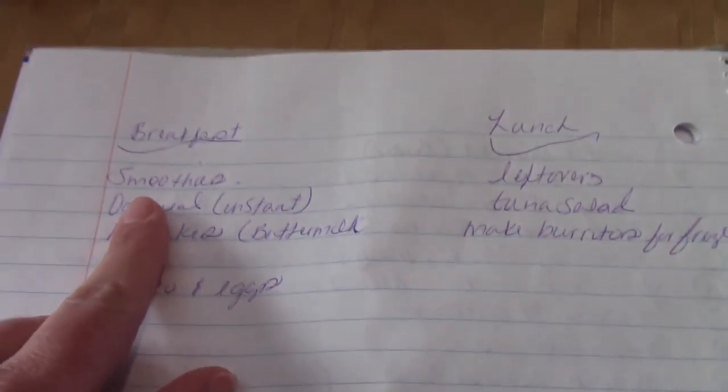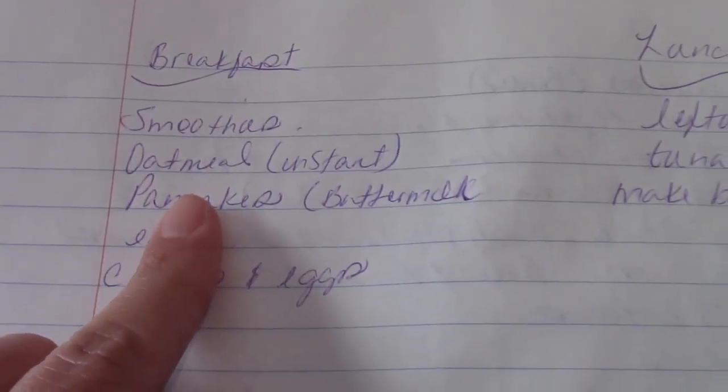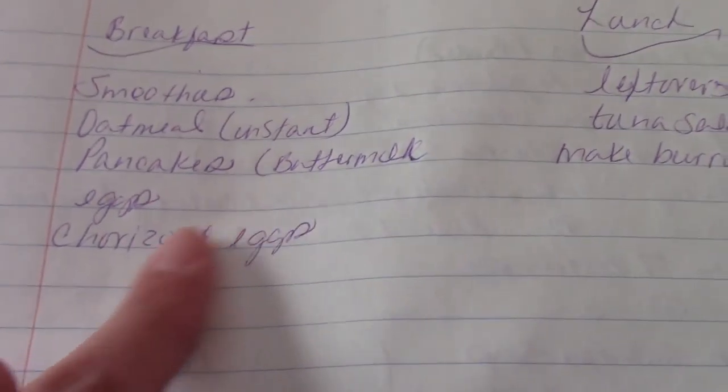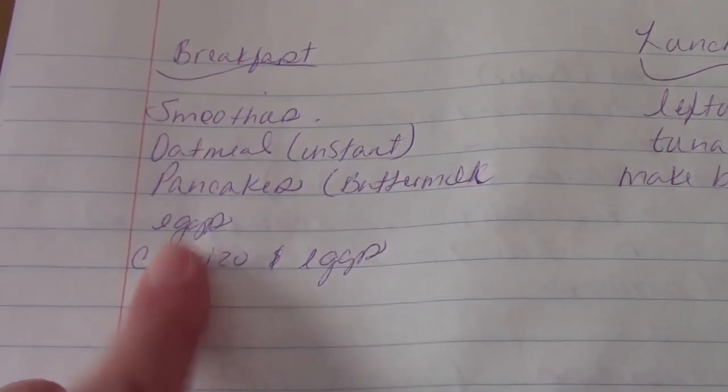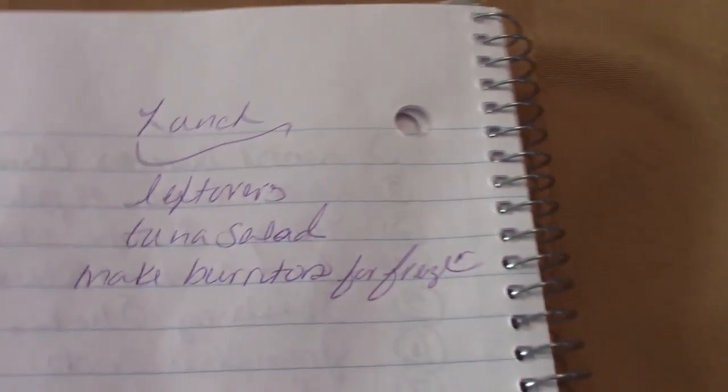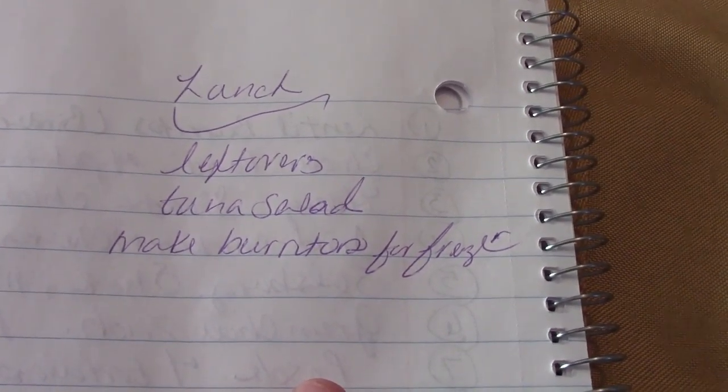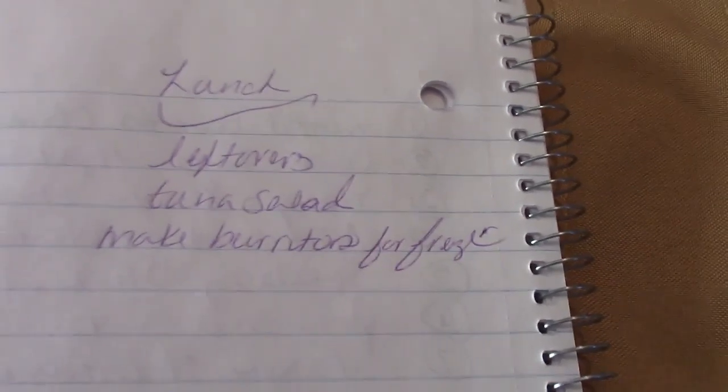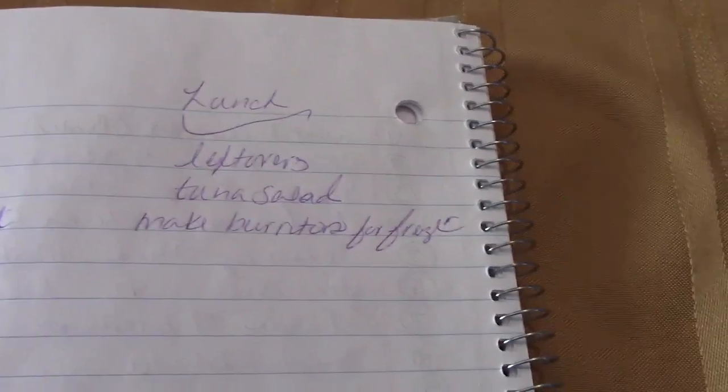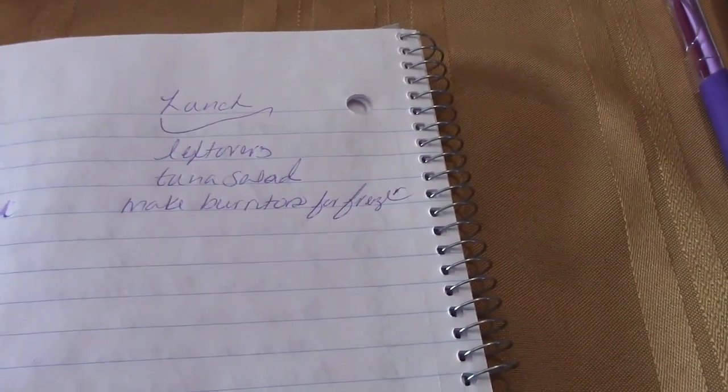So this is how I do it, and then I flip the page over and I just write some ideas for breakfast. So I'm gonna do some smoothies. We have a whole box of instant oatmeal. We'll do buttermilk pancakes which were so good. Eggs - our chickens are laying eggs again so we have lots of eggs. And then for lunch we'll do leftovers, tuna salad. I'm gonna make some bean and cheese burritos and freeze them - I'll show you how I do those when I do them. And then I also do some hot pocket type stuff, so maybe I'll do some of those.